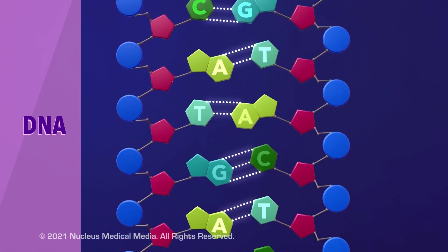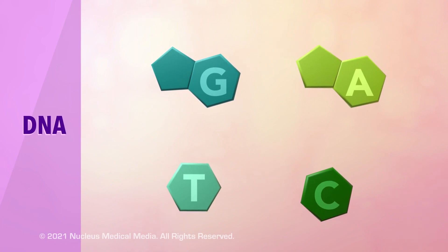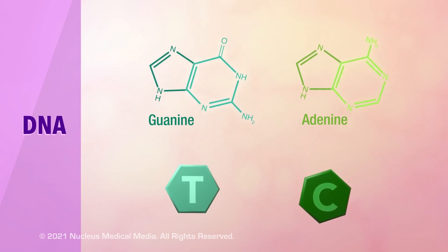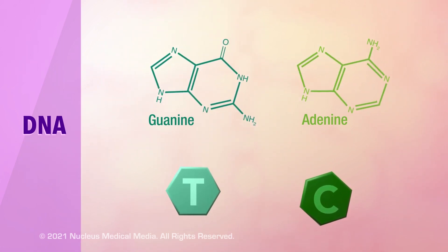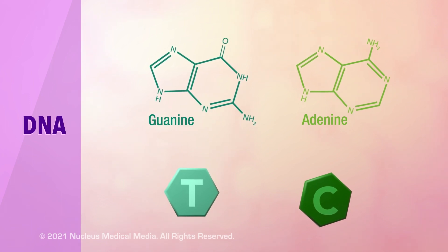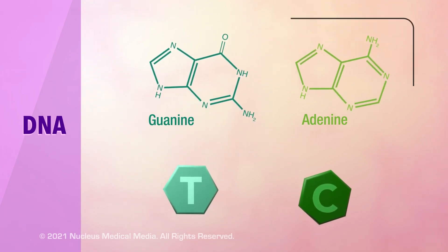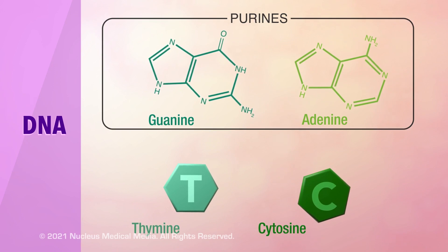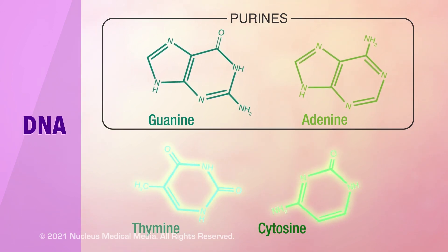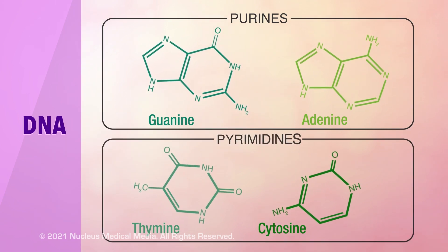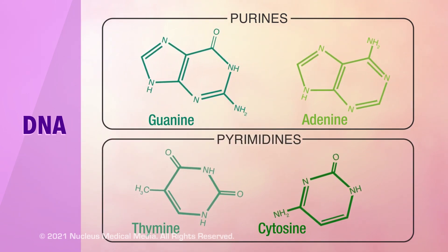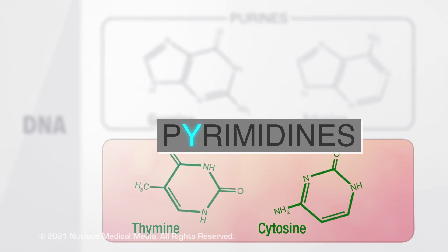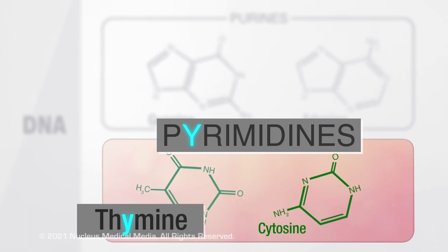Scientists classify nitrogenous bases according to the shape of their molecules. Adenine and guanine both have a double ring structure containing a 6-membered and a 5-membered nitrogen-containing ring fused together — these are chemically classified as purines. Thymine and cytosine both have only a single 6-membered nitrogen-containing ring, so they are classified as pyrimidines. A helpful hint: pyrimidine has a Y in its name, and so do thymine and cytosine.